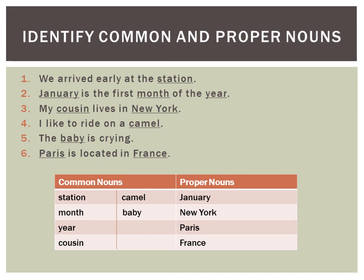'I like to ride on a camel' — we do not know which camel, so this is a general name and therefore it is a common noun. 'The baby is crying' — no specific name has been given, therefore baby here is a common noun. 'Paris is located in France' — both Paris and France are specific names, therefore they are proper nouns.